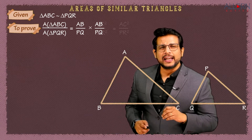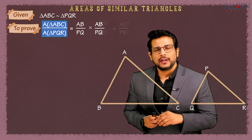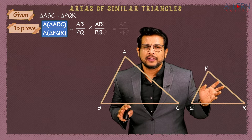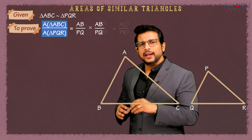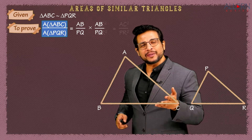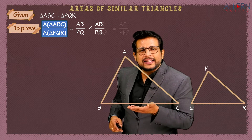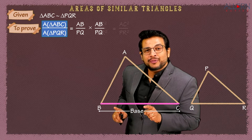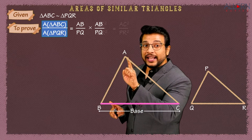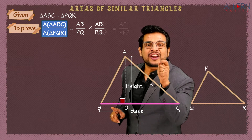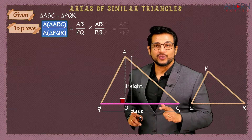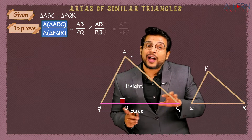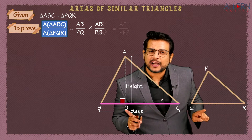On the left-hand side we want area of triangle ABC upon area of triangle PQR. We're dealing with area of a triangle, and the formula is half × base × height. We don't have a height drawn, but any side can be the base. Let's consider BC as a base — then the height is dropped from the opposite vertex A.